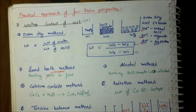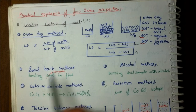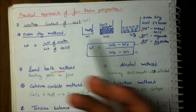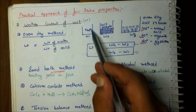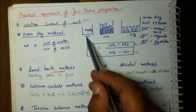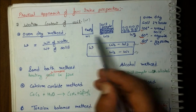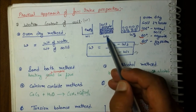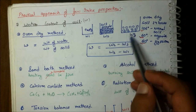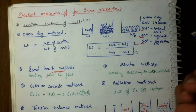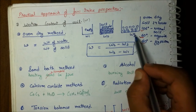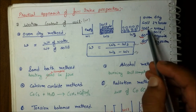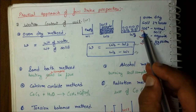Now moving to the practical approach of measuring index properties. For water content, we take a soil sample in a container. The empty container weight is W1, the container with soil sample is W2, and after 24 hours of drying it becomes W3.